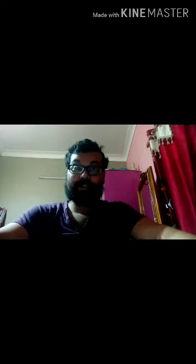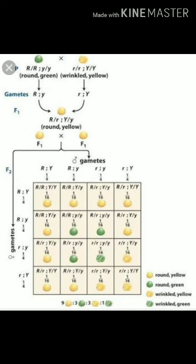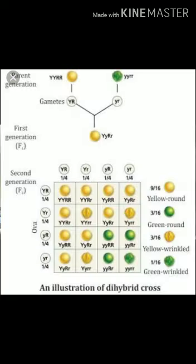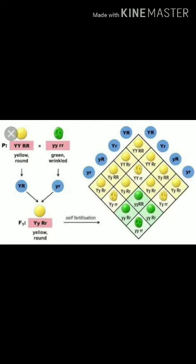Today in Class 12 Biology we start with the dihybrid cross, which is a process of crossing or mating between two organisms with alternative traits of two different characteristics. We already studied the monohybrid cross involving a single character with an alternative trait of a single character. Here, two different characteristics are involved, and that is called a dihybrid cross — for example, yellow round seed (YYRR) crossed with green wrinkled seed (yyrr) in the parental generation.